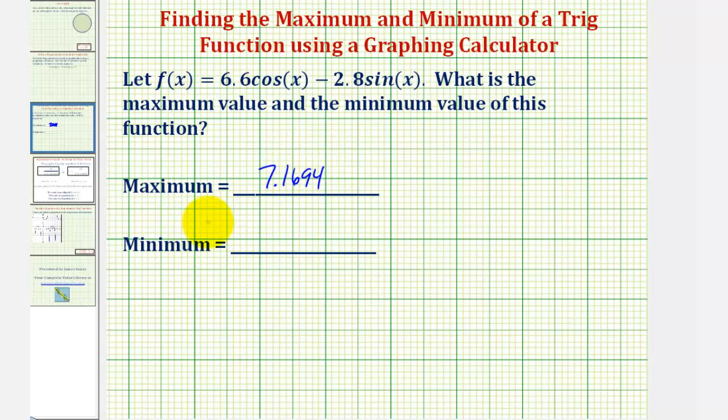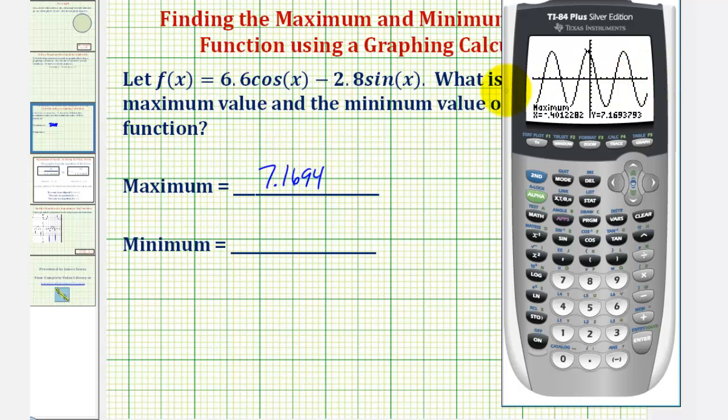Now, we'll find the minimum value. Looking at the graph of our function, notice how the x-axis is the midline. So, we might predict that the minimum function value be negative 7.1694. But, let's go ahead and verify that with the graphing calculator.